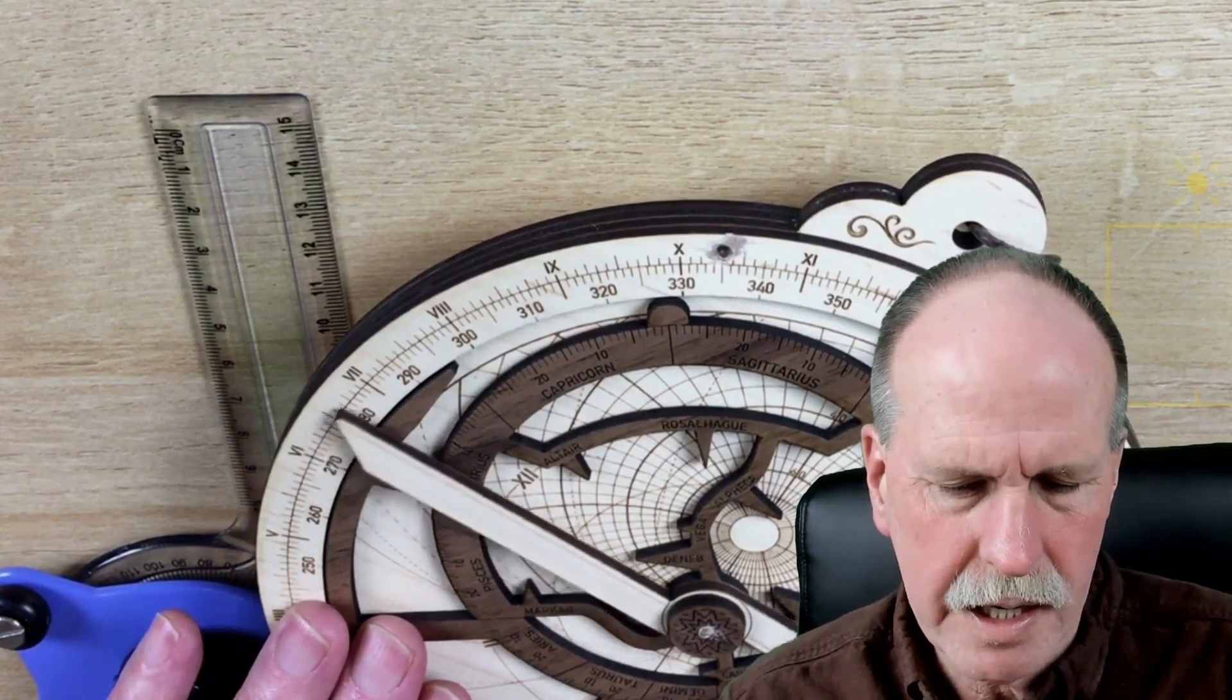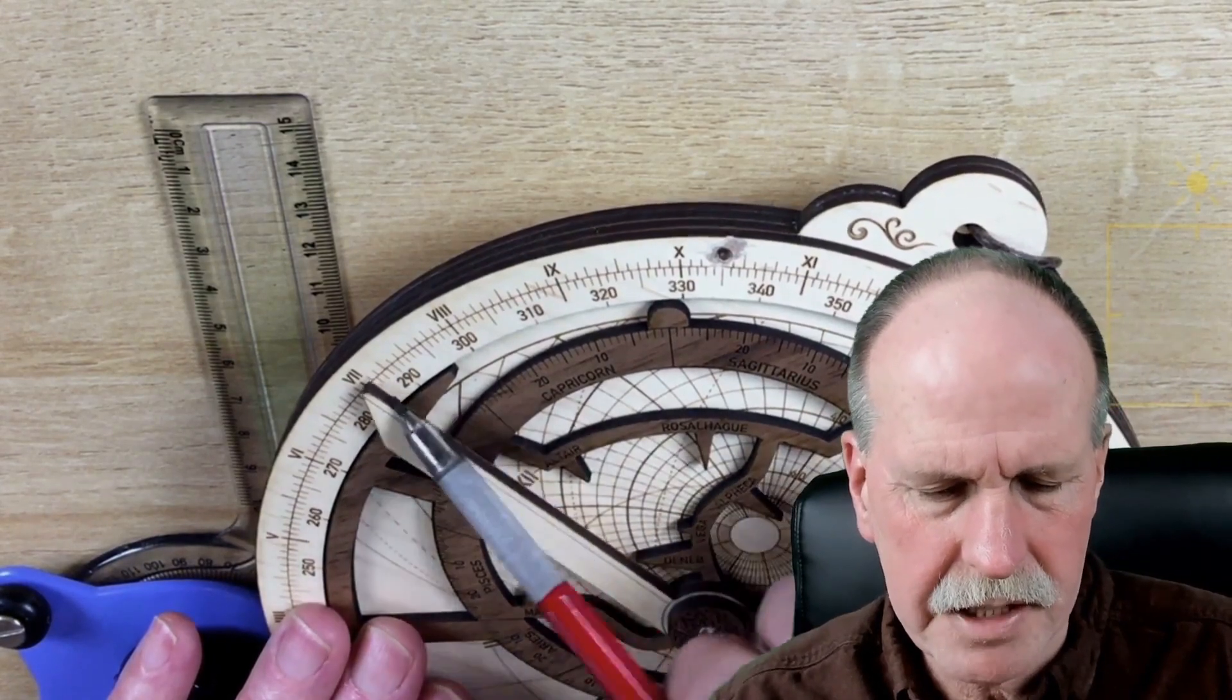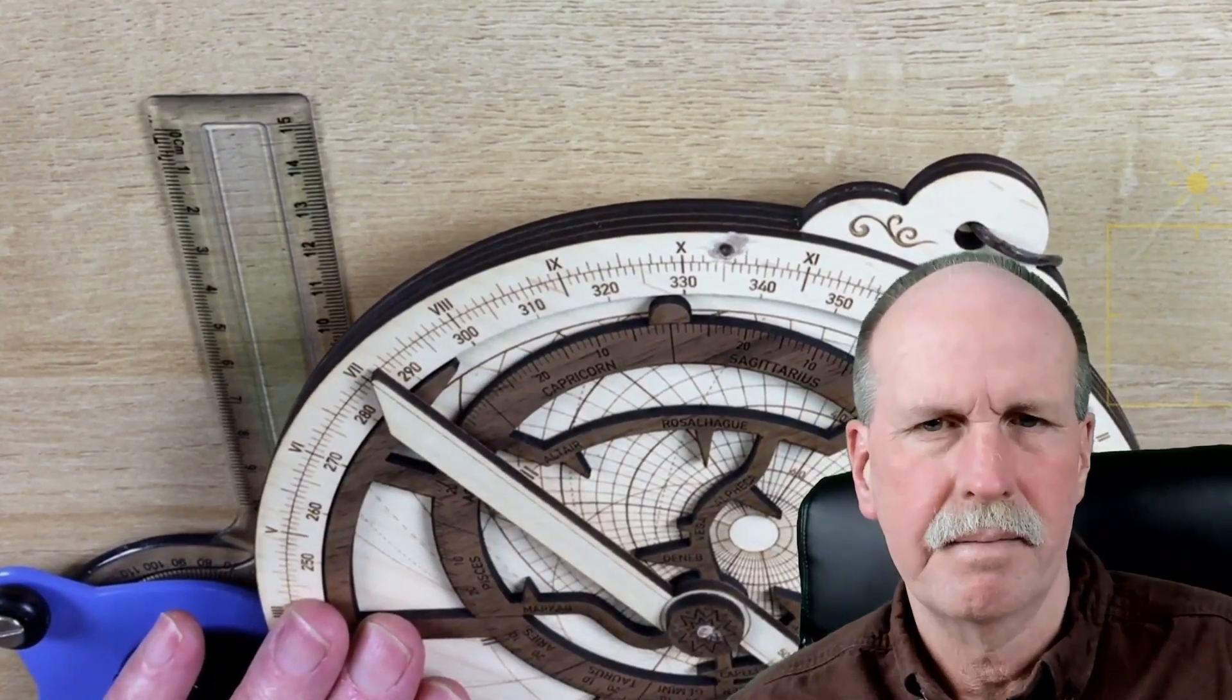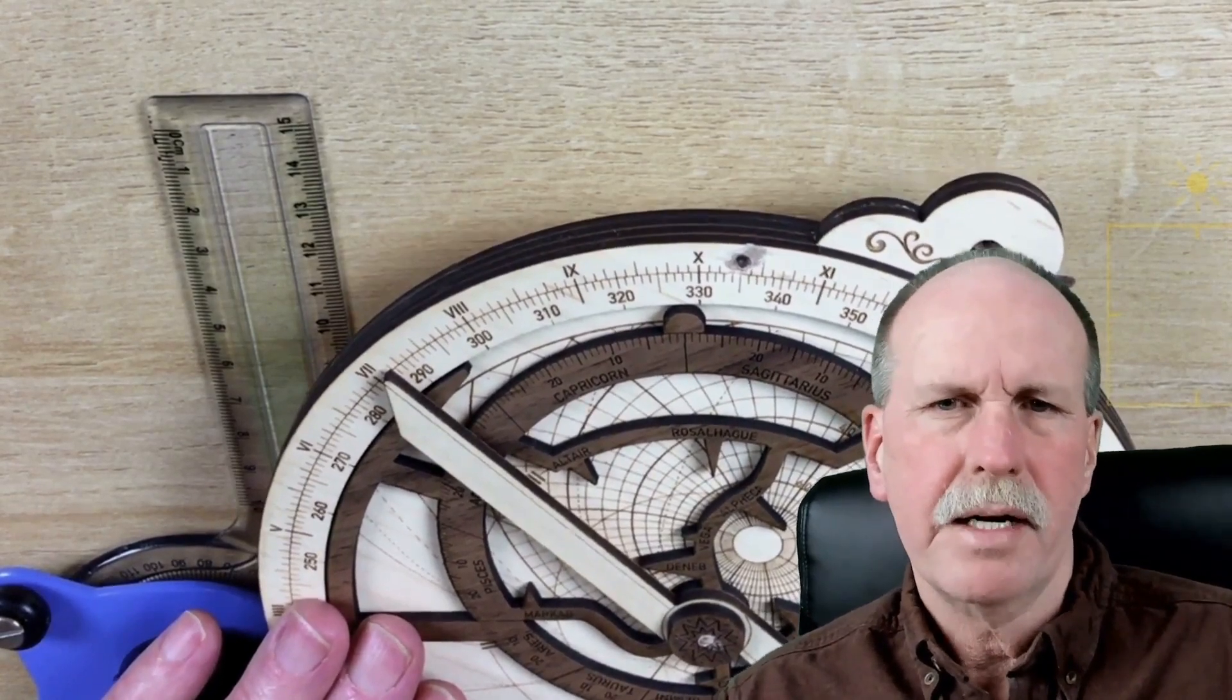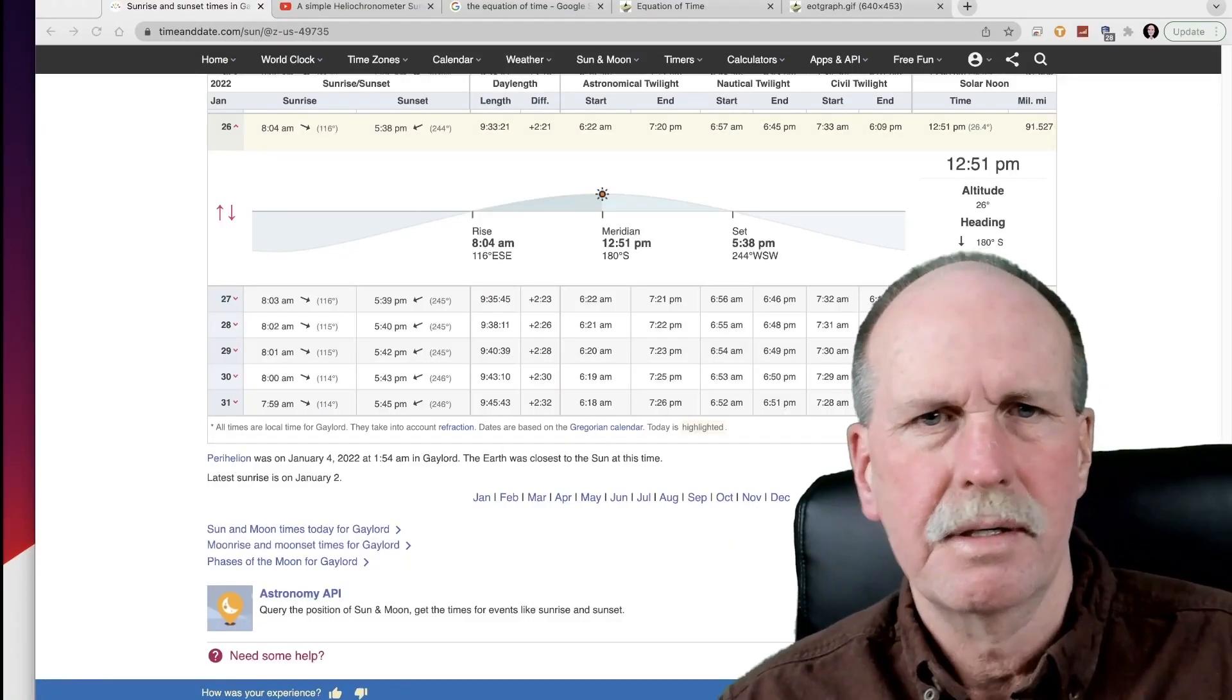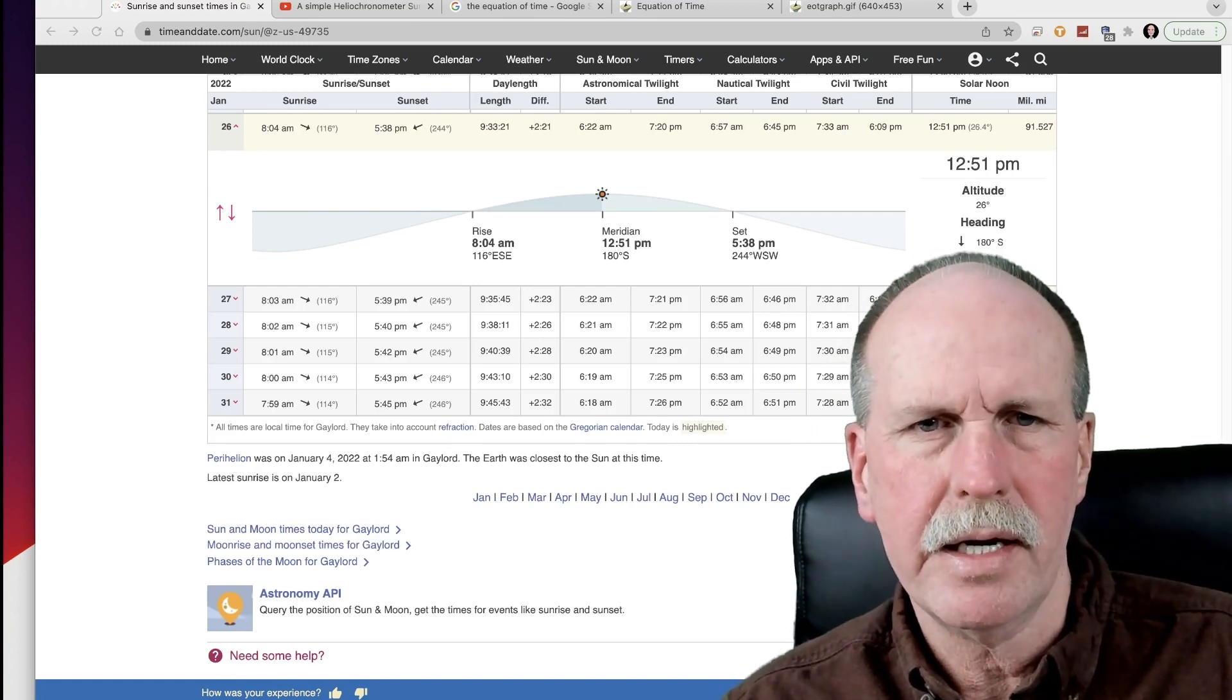Then we take our label and we put our label right over the seventh day of Aquarius and then we come out to the outside and we read that time and I'm getting approximately 7:10. Now we add the 51 minute correction to that and that comes up to 8:01. Let's see what time dawn is in Gaylord, Michigan. It's 8:04. We're three minutes off. That may have been a reading error.